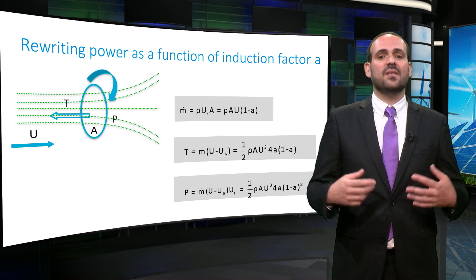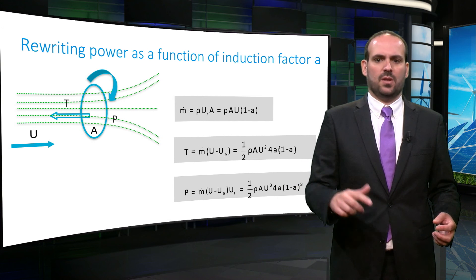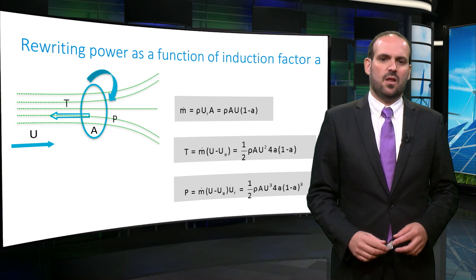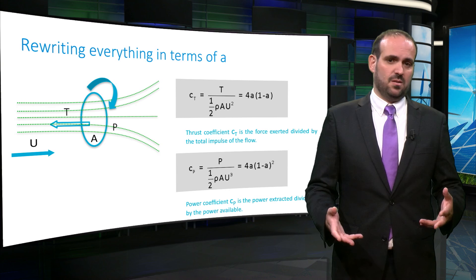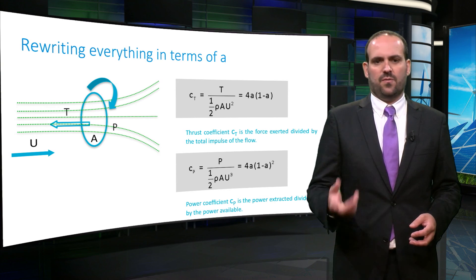Therefore, we obtain a simple expression for power as a function of the deceleration of the wind. Through further simplification, one can define a thrust coefficient and a power coefficient.